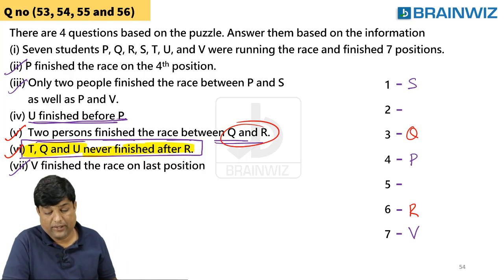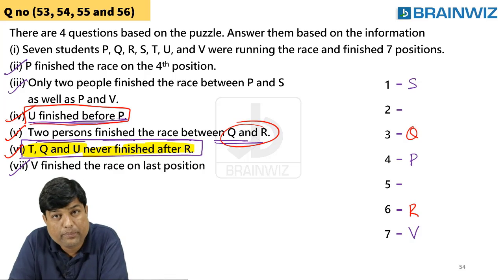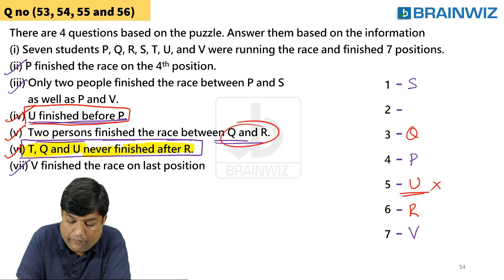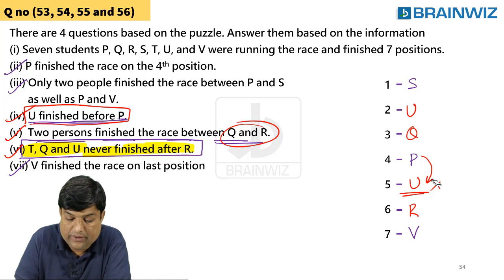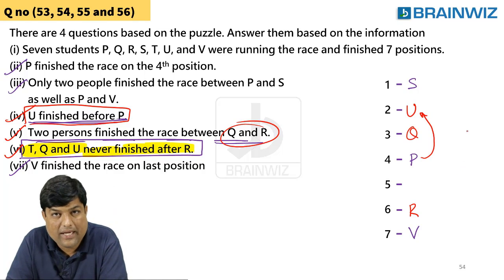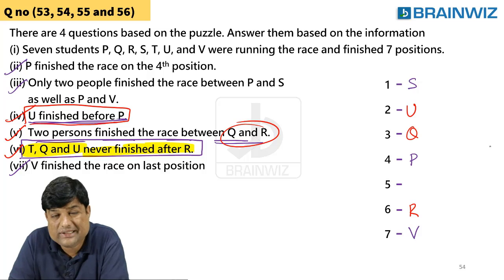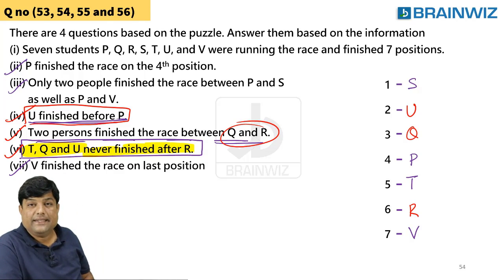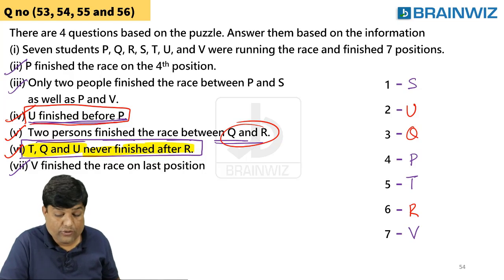Now the fourth point: U finished before P. If we put U here, U has not finished the race before P — it would be finishing after P, so that's wrong. If we put U before P, then definitely U finishes the race before P. Now only one person is left — and that person is T. So T fills the remaining position.